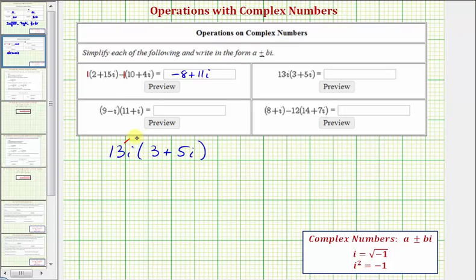So we'd have 13i times 3 plus 13i times 5i. Well, 13i times 3 is equal to 39i, and then we have 13i times 5i, that's plus 65 i squared.